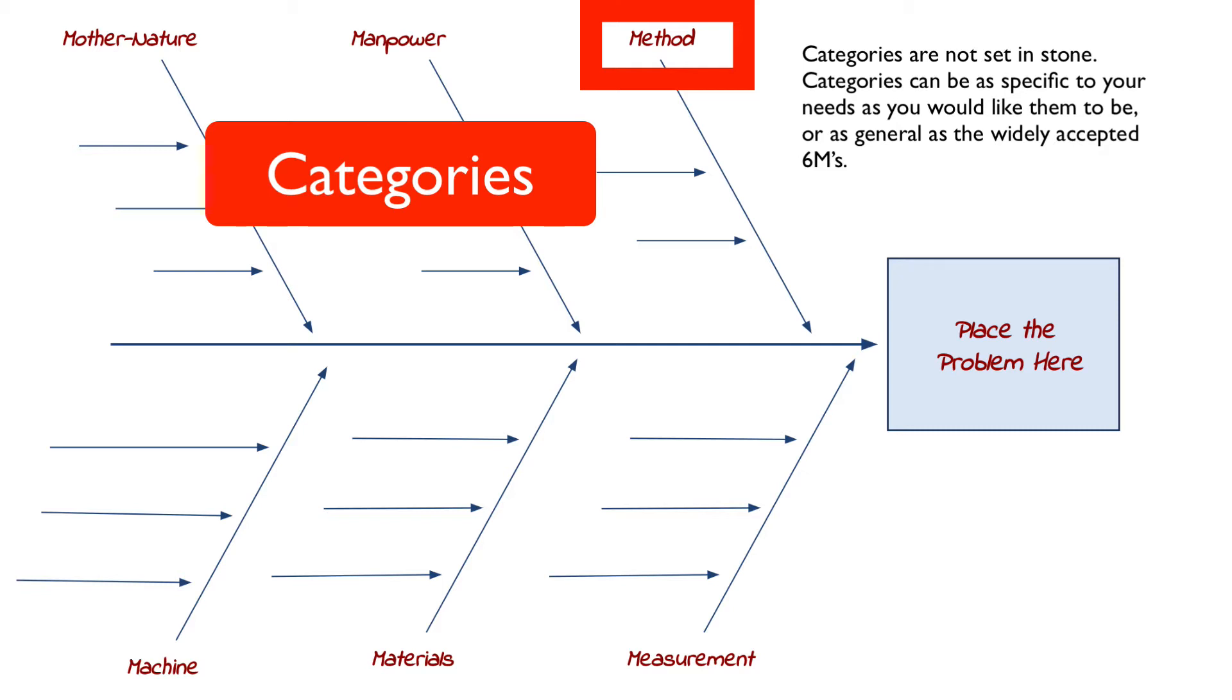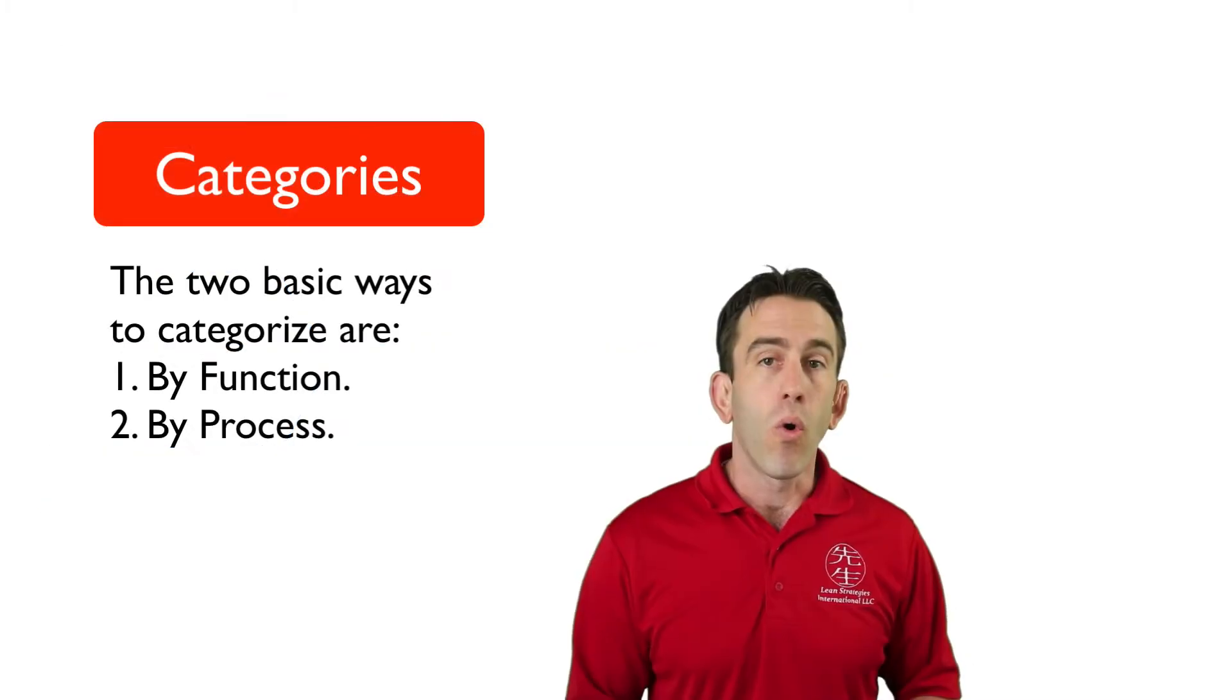Categories can be as specific to your needs as you would like them to be, or as general as the widely accepted 6Ms. There are two basic ways to categorize: by function or by process.